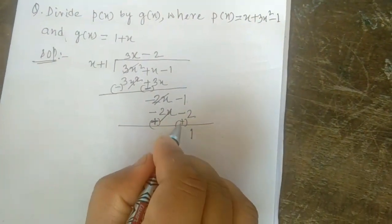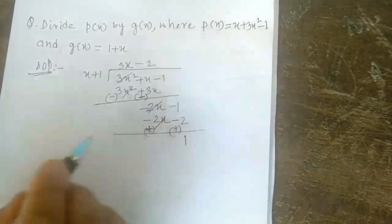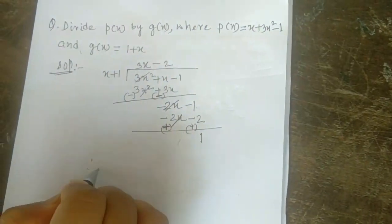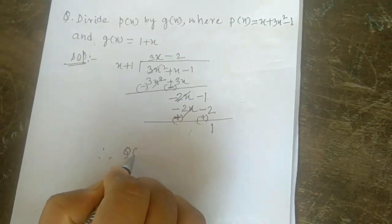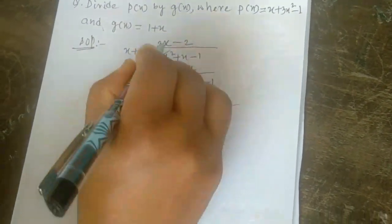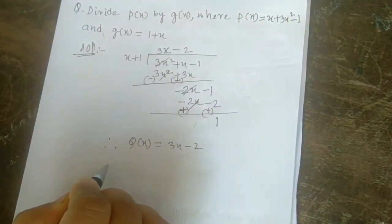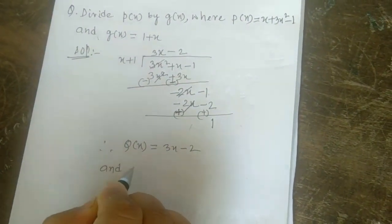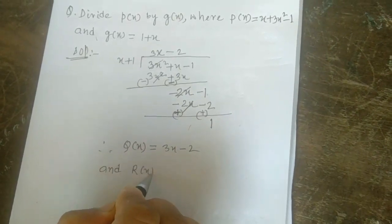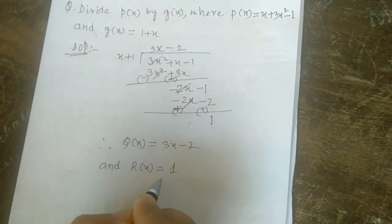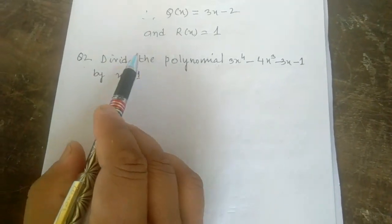This is greater so positive. Therefore, quotient q(x) = 2x - 2 and remainder r(x) = 1.